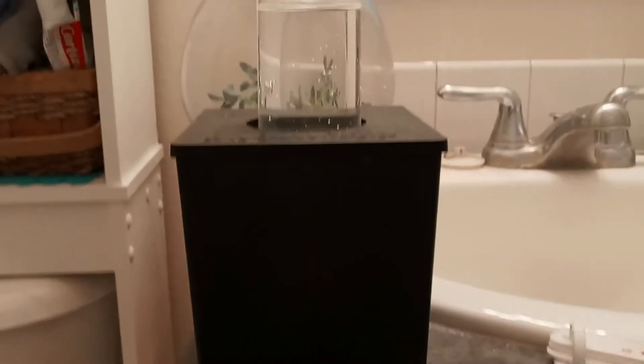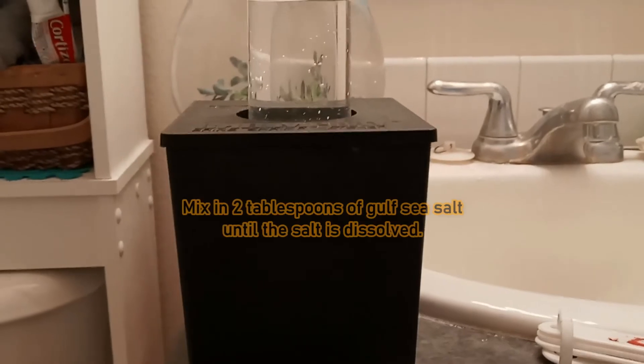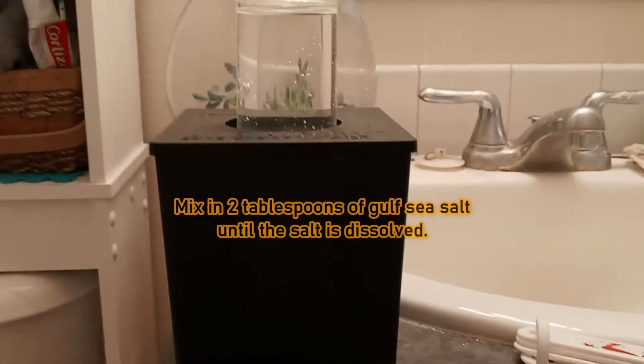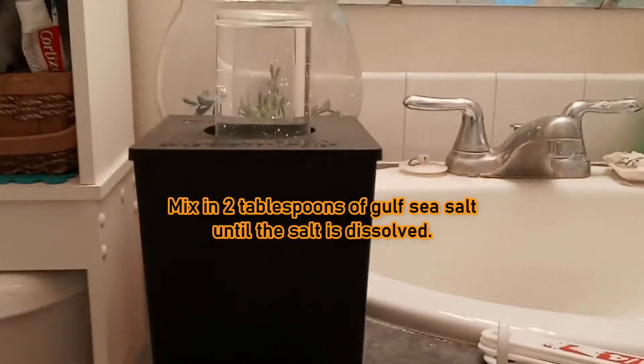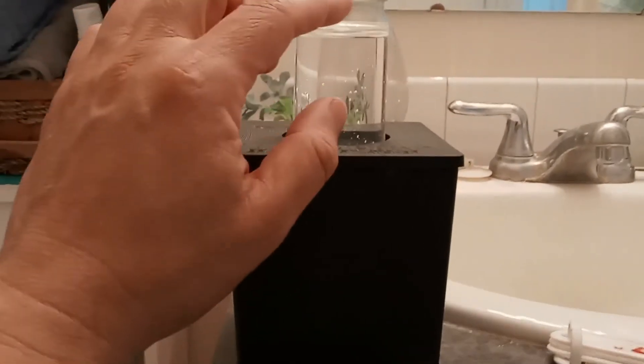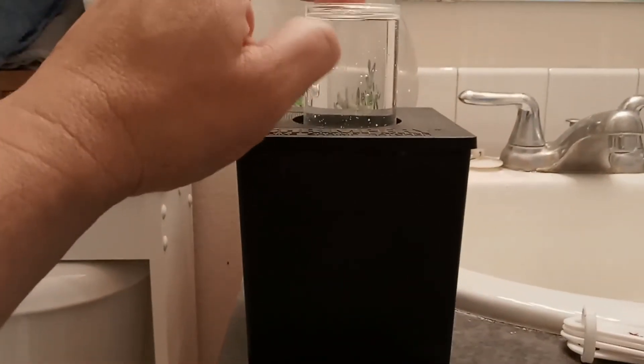So we hydrated the brine shrimp eggs for an hour, then we put in the gulf sea salt two tablespoons and we mixed it, stirred it till it dissolved and then all we did is put this lid on and then took this and flipped it over and upside down because as you'll see there is a hole there.